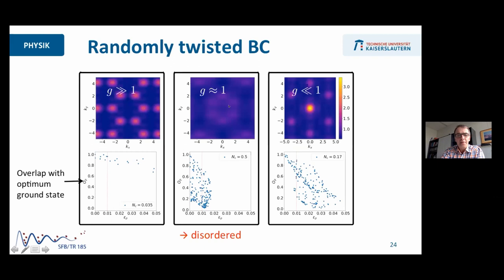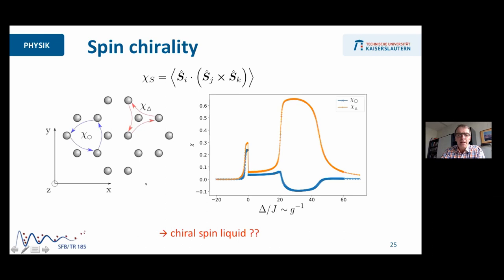How about the phase in between? What we looked at is we took a torus configuration with randomly twisted boundary conditions and calculated the overlap with the optimum ground state as a function of the energy of these states. Here what you can see is that in this ordered phase, there are only very few states which have large overlap with the optimum ground state and still have the lowest energy. While here in this range, there are very many configurations which have little overlap with the optimum ground state and still have very low energy. So this is a hallmark of a disorder phase.